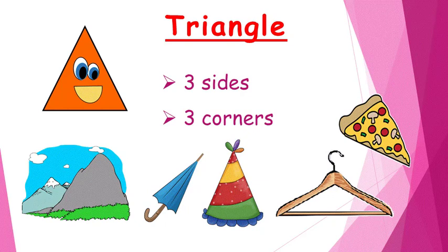Triangle has three sides and three corners. You can find the shape of a triangle in many things around you, like a mountain, an umbrella, a birthday cap, a hanger, a pizza, etc.